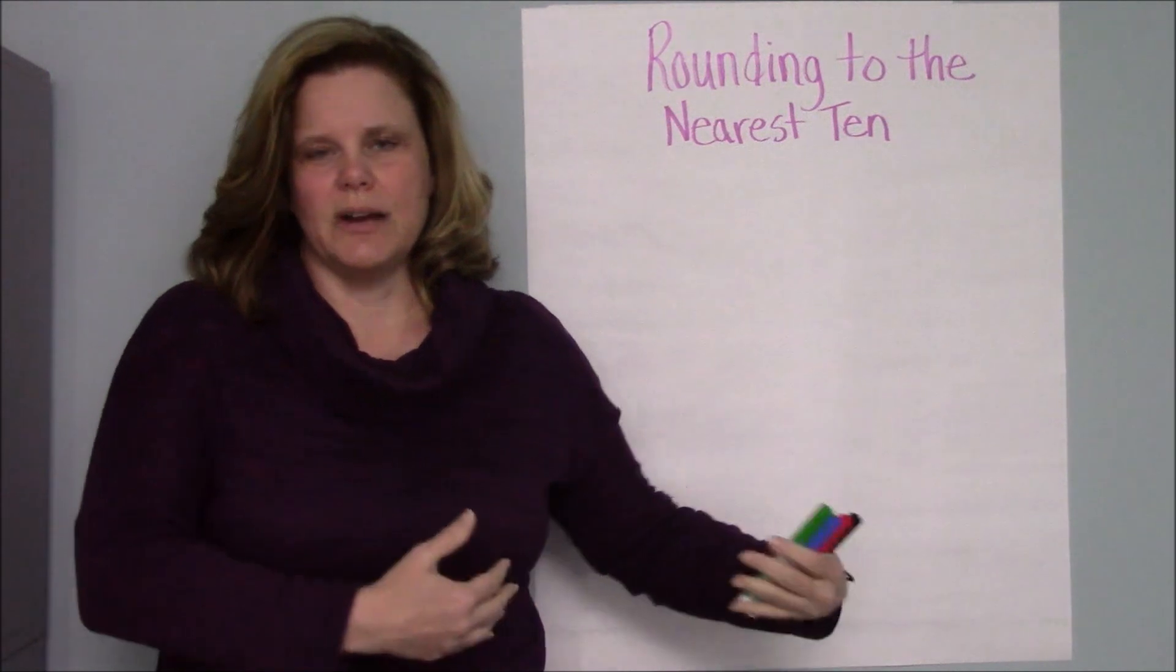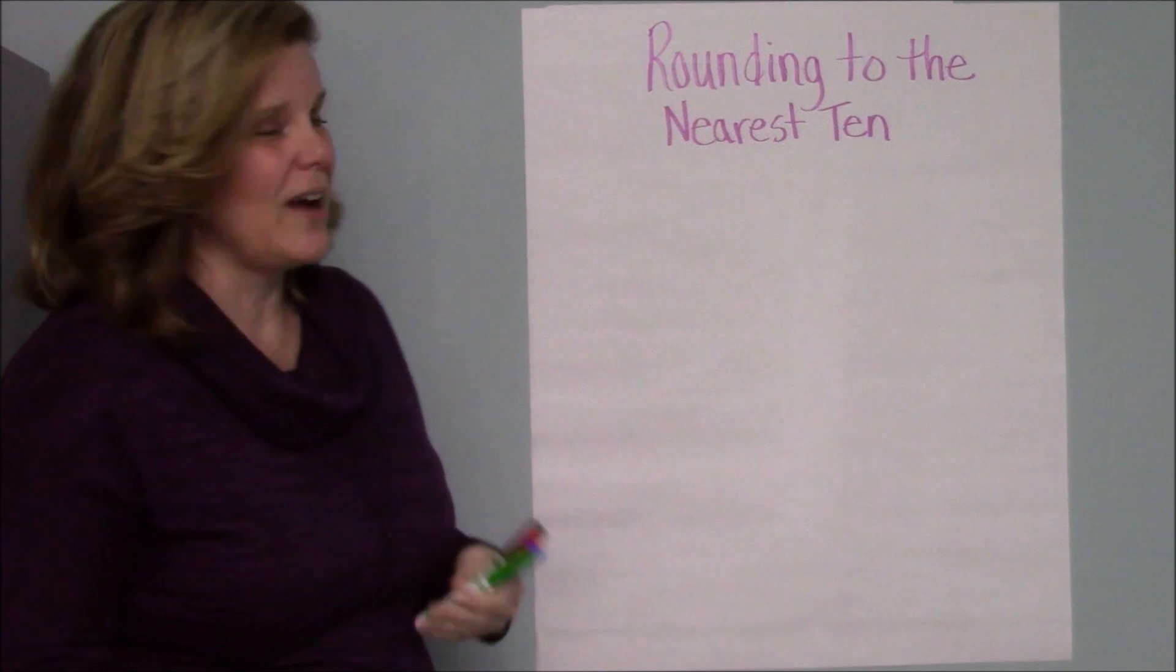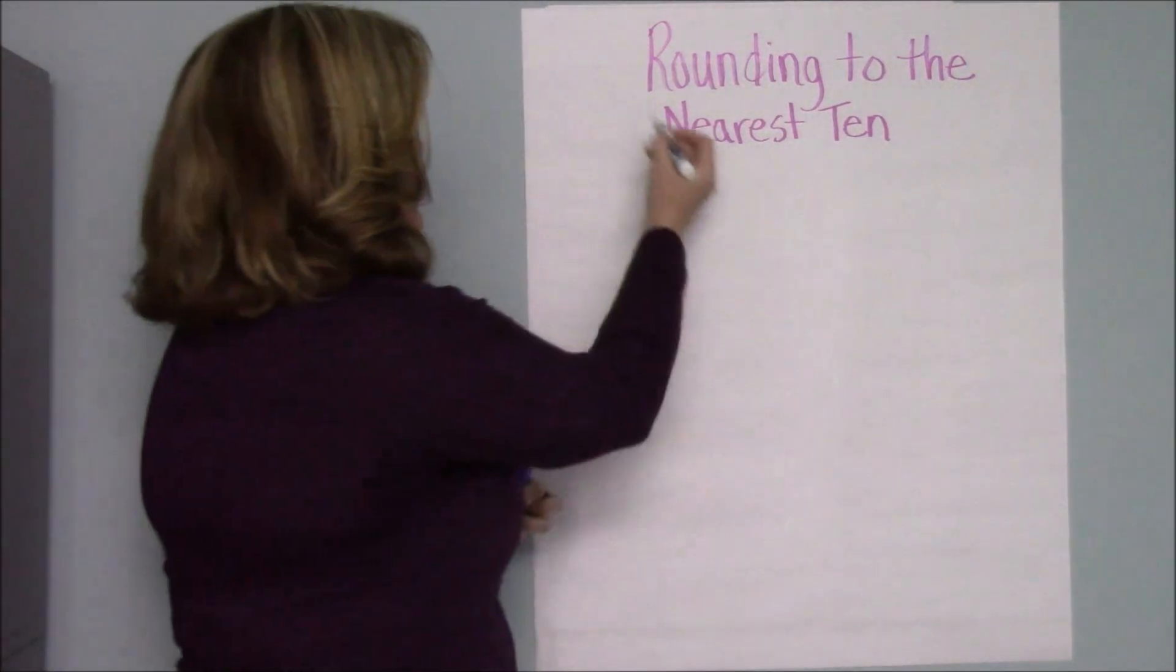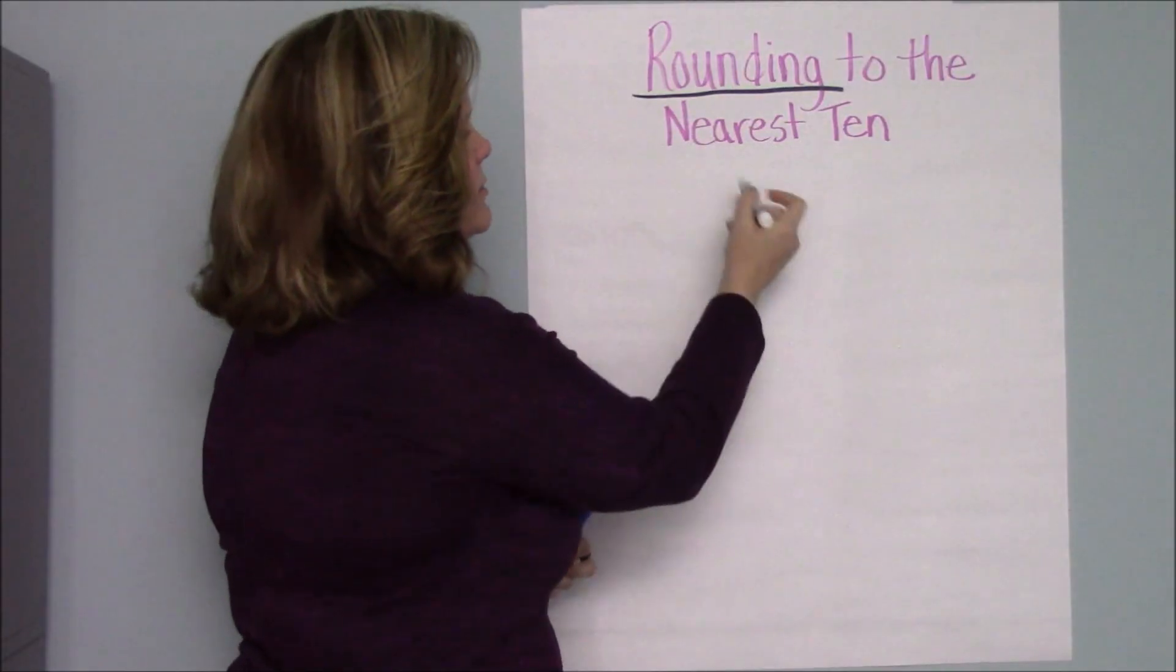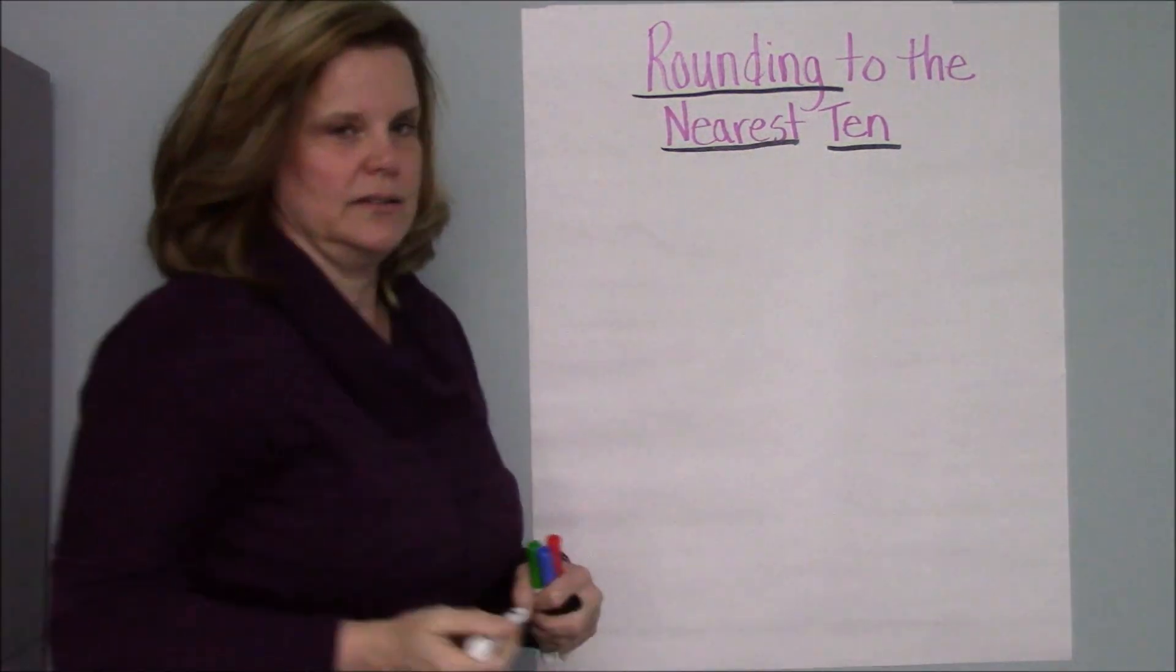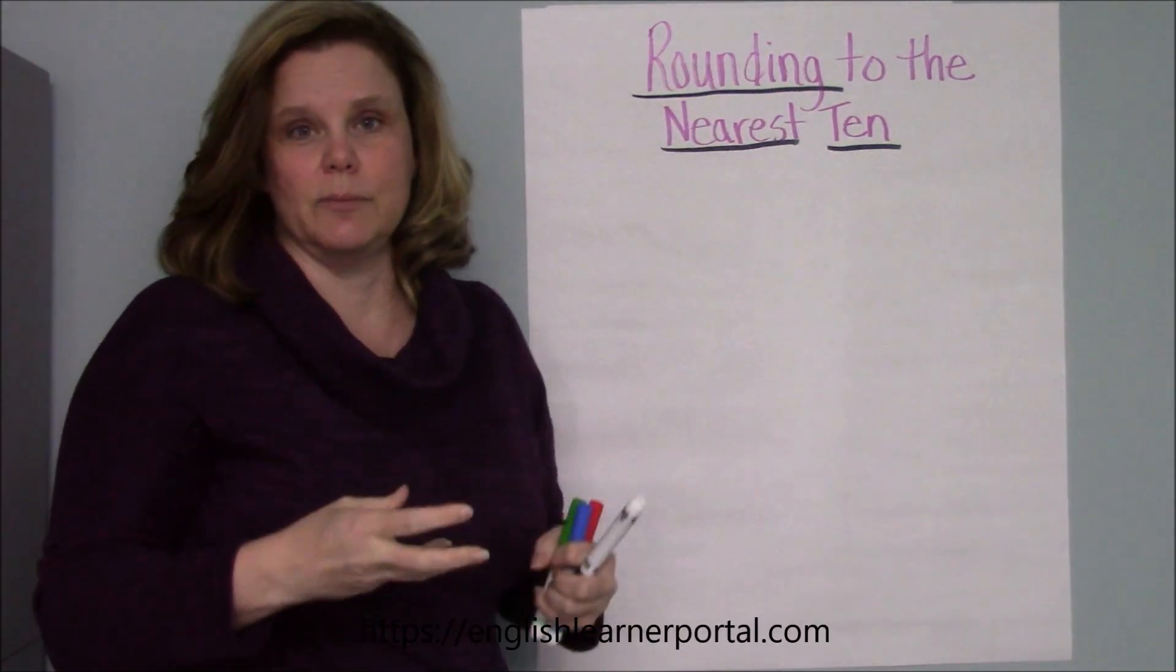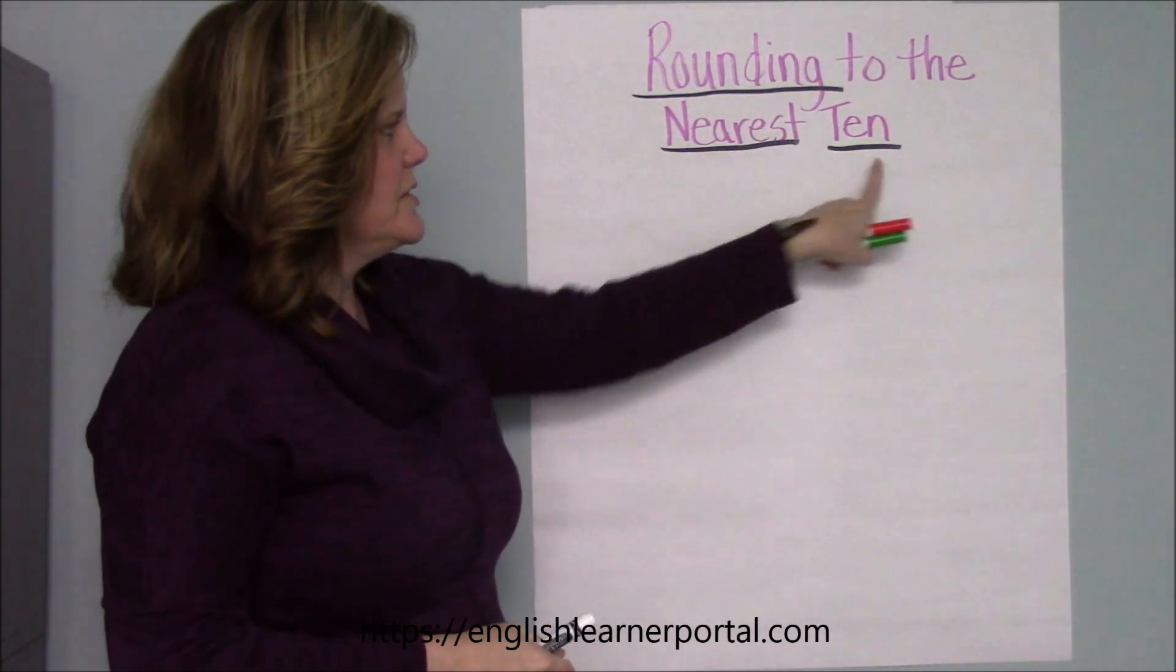I'm going to model now the process that I would use with students. All right, so today we're talking about rounding to the nearest ten. There are a few important words here in our title. Rounding we've been talking about for a while. And then I also want you to pay attention to these two keywords: nearest and ten. So rounding is the process we're going to use, the math process. We're going to round numbers.